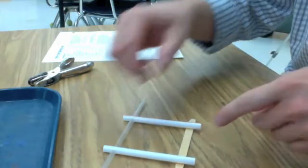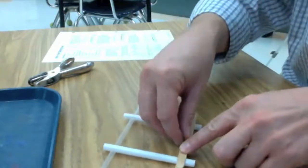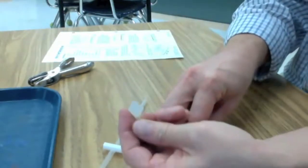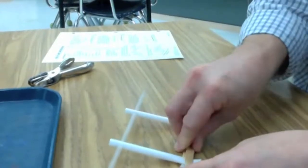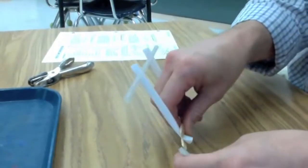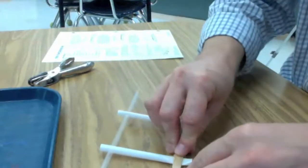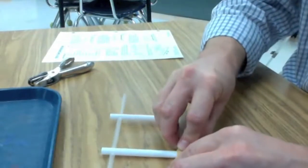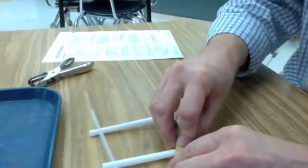Next is the tricky part. You want to take the jumbo straws, trap them between the two popsicle sticks with the tapered ends up. You may need an extra pair of hands to do this. Have some of the jumbo straws sticking out below; we'll trim those off later.